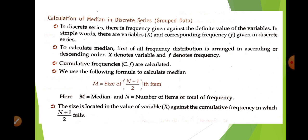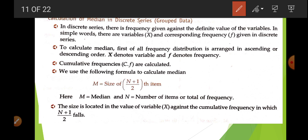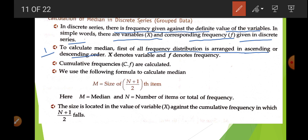Now, calculation of median in discrete series. Discrete series is a grouping of data that is exactly measurable. There is a frequency given against a definite value of the variable. To calculate the median: first, arrange all frequencies in ascending or descending order; second, calculate cumulative frequency (CF); third, use the equation N+1 upon 2 to find the median.